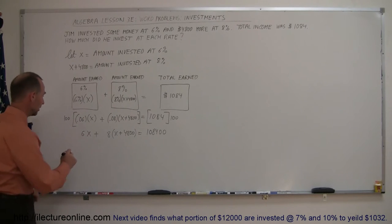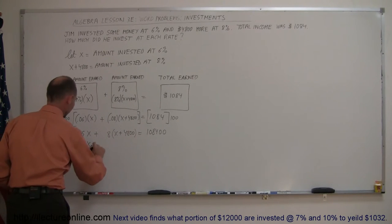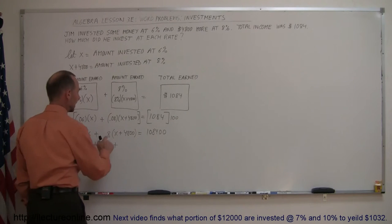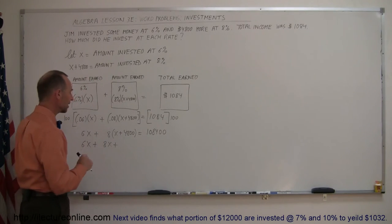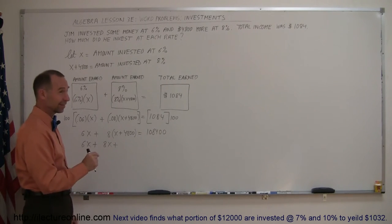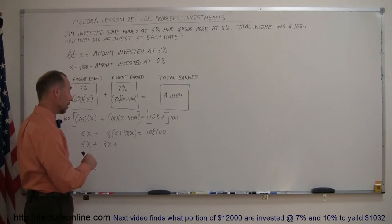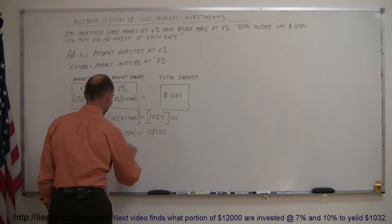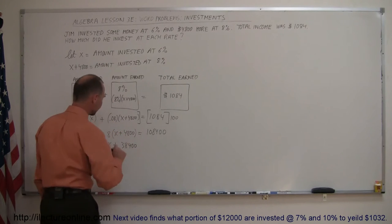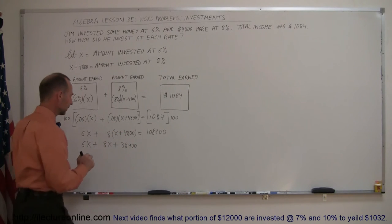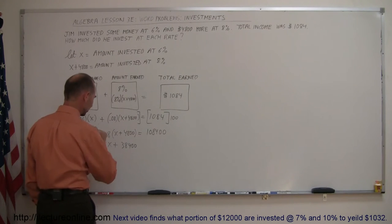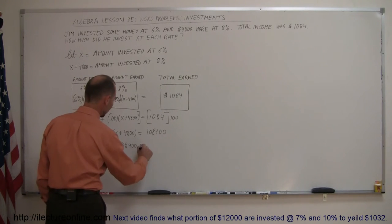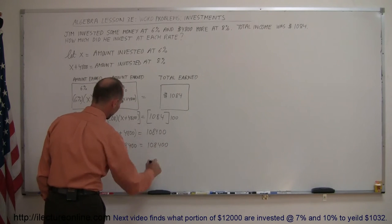Now let's get rid of these parentheses. So that's 6x plus 8x plus 8 times 4800, that's the same as 8 times 5000 minus 8 times 200. 8 times 5000 is 40,000, 8 times 200 is 1600. That means 40,000 minus 1600 is 38,400. Quick check: 8 times 8 is 64, that's 4, remains 6. 6 times 8 times 4 is 32 plus 6 is 38. That's correct.